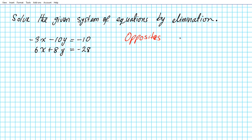The strategy you want to use is the idea of multiples. Ask yourself: is one variable's coefficient in one equation a multiple of the other? If that's the case, then that's the easiest one to use. If the variables are not multiples of each other, then you have to use the GCF approach — find the greatest common factor of either the coefficients of the x's or the y's.